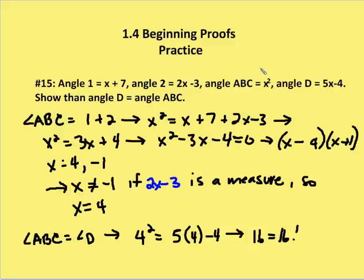So angle ABC is equal to angle 1 plus angle 2, or x squared is equal to x plus 7, which is angle 1, plus 2x minus 3, which is angle 2.